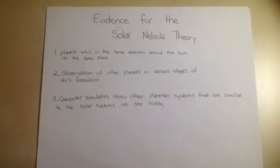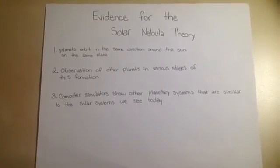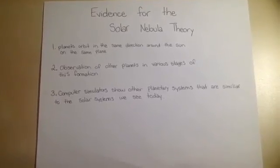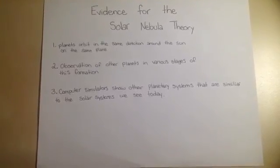Evidence for the solar nebula theory. One, planets orbit in the same direction around the sun on the same plane. Two, observations of other planets in various stages of this formation.